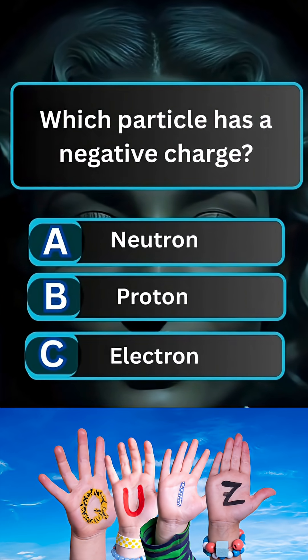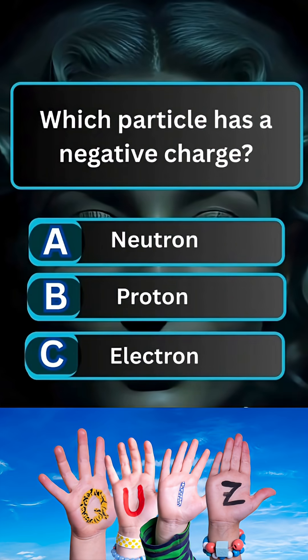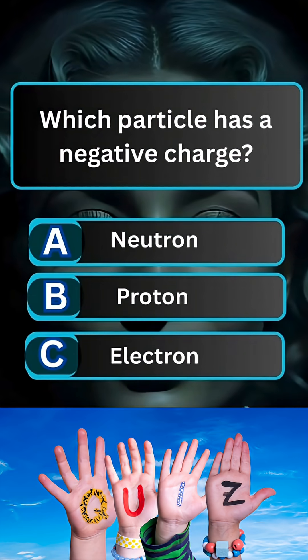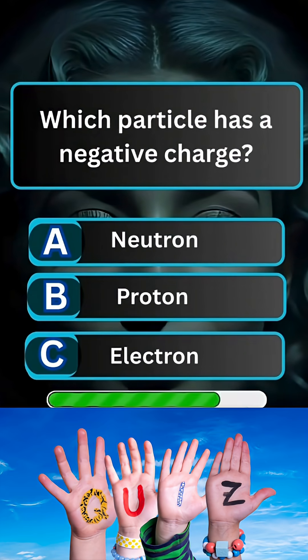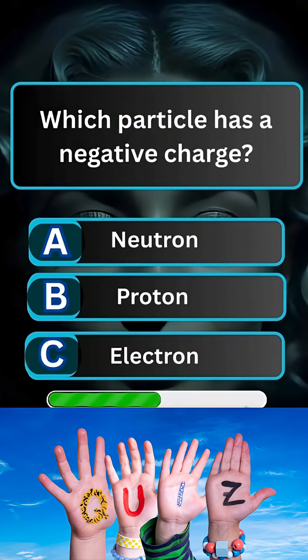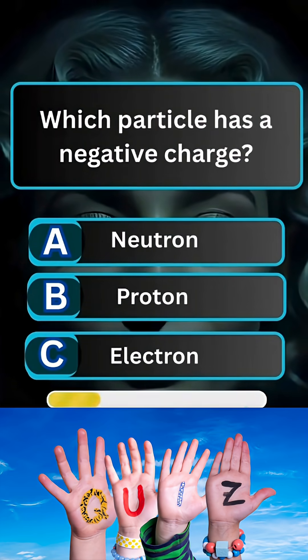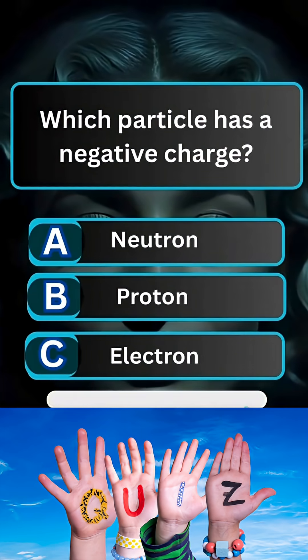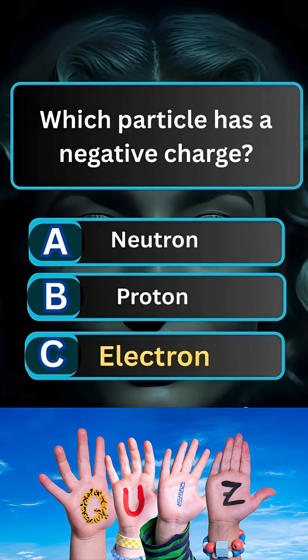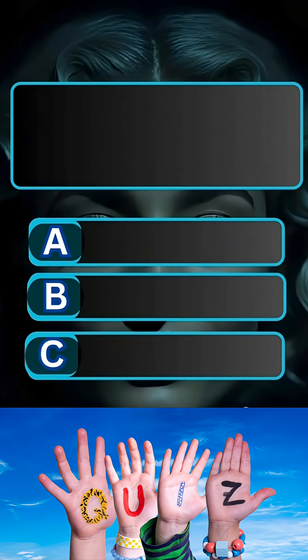Question 7. Which particle has a negative charge? Answer C: Electron.